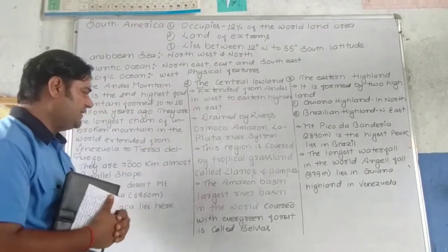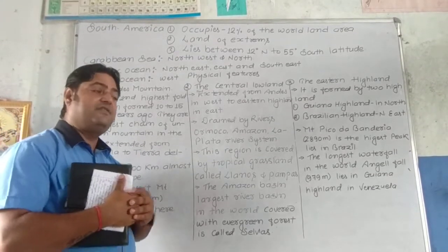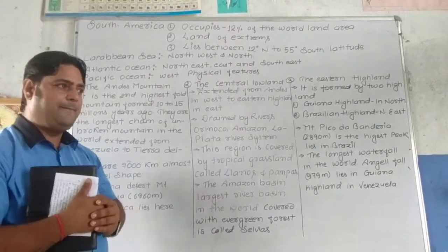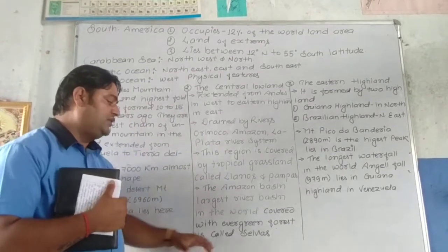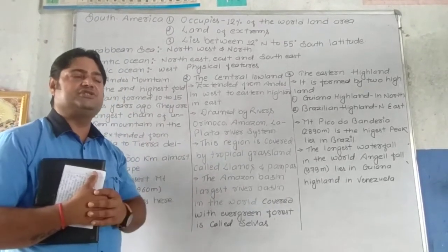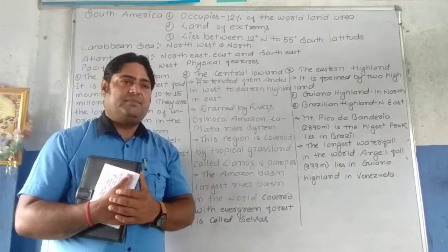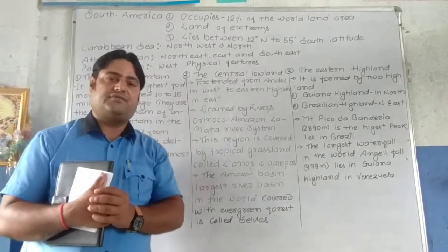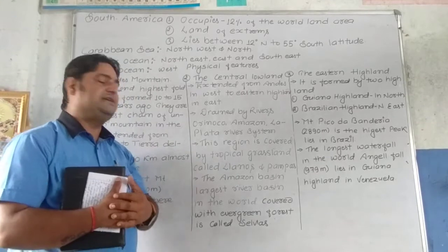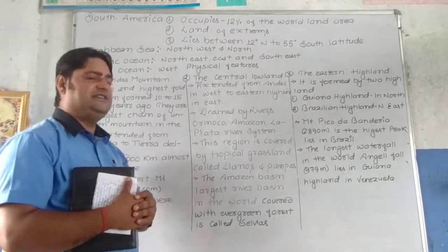The Amazon basin, which is the largest river basin in the world, also lies here in the Central Lowland. It is covered by evergreen forest known as Selva, where trees are 30 to 50 meters tall. About 90% of the living creatures are found in this evergreen forest. However, it is not known as the zoo of the world because many poisonous creatures and animals are found there.